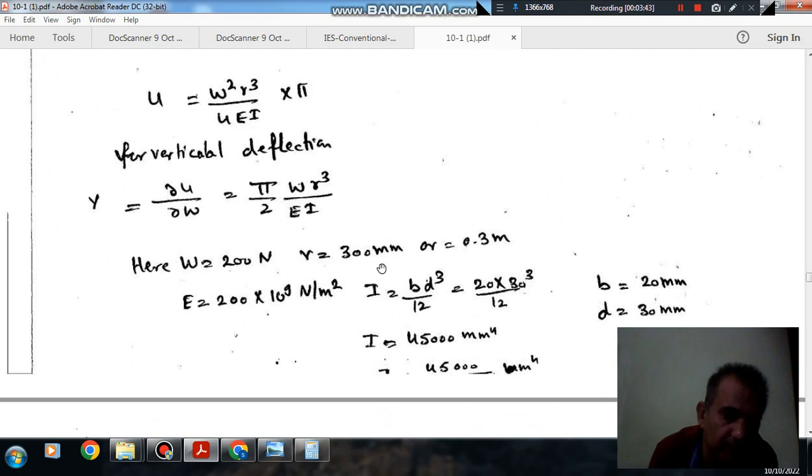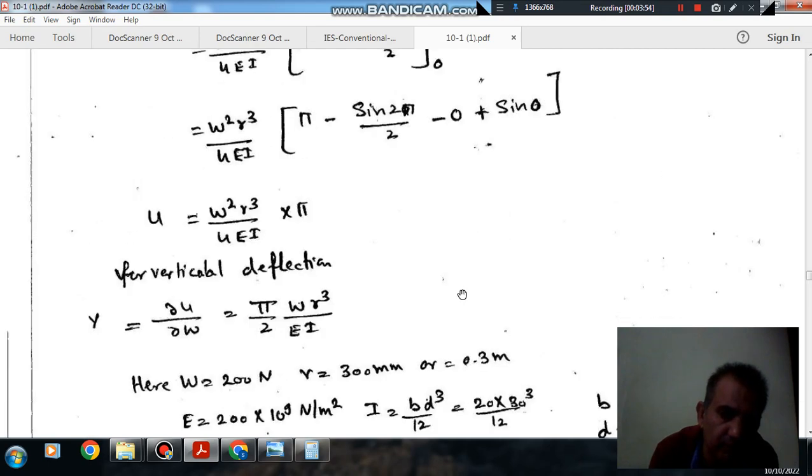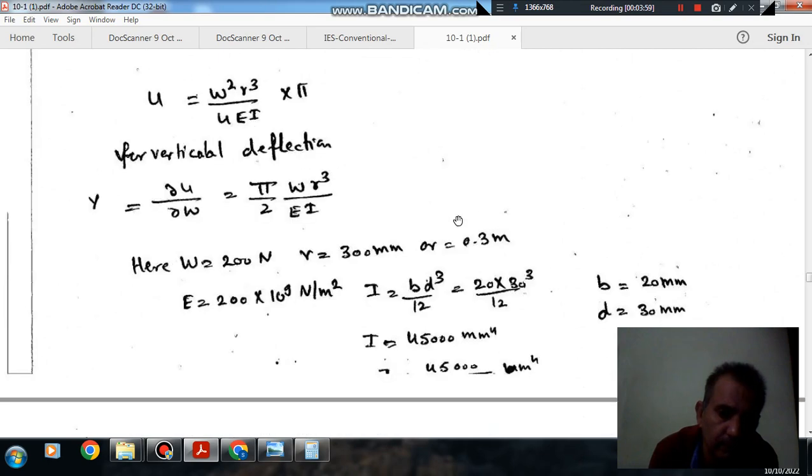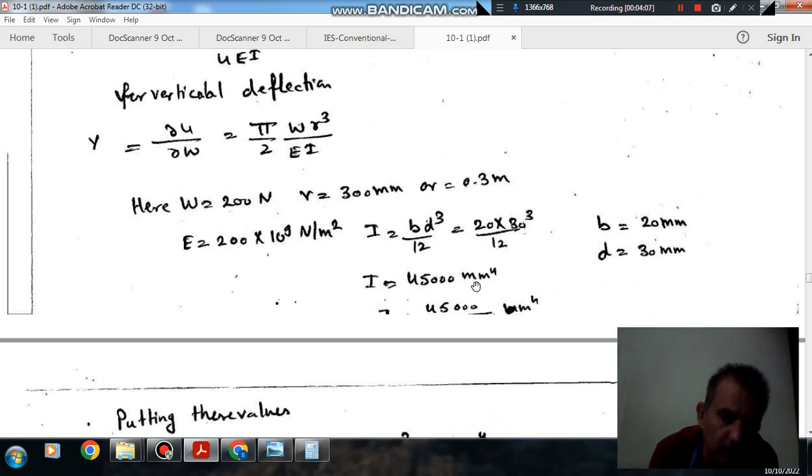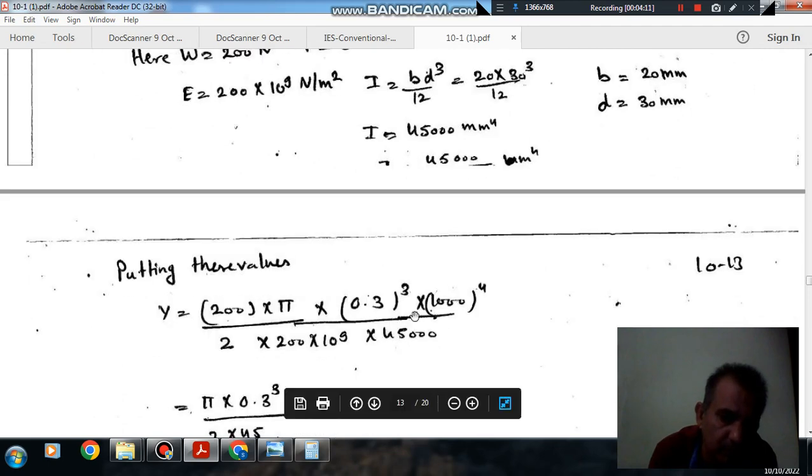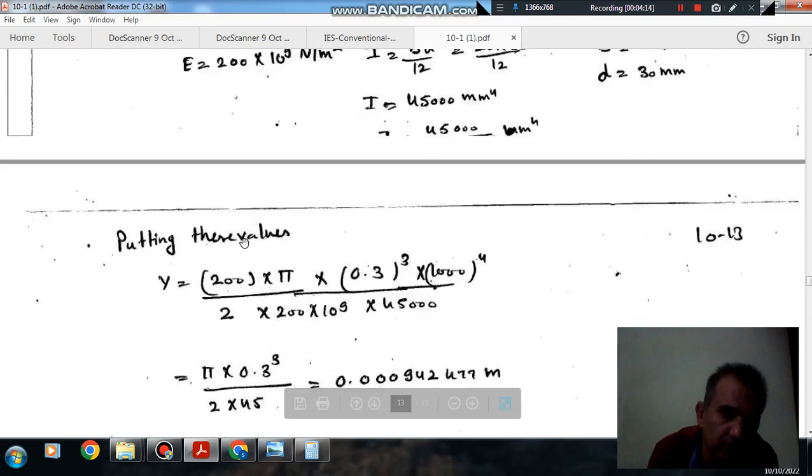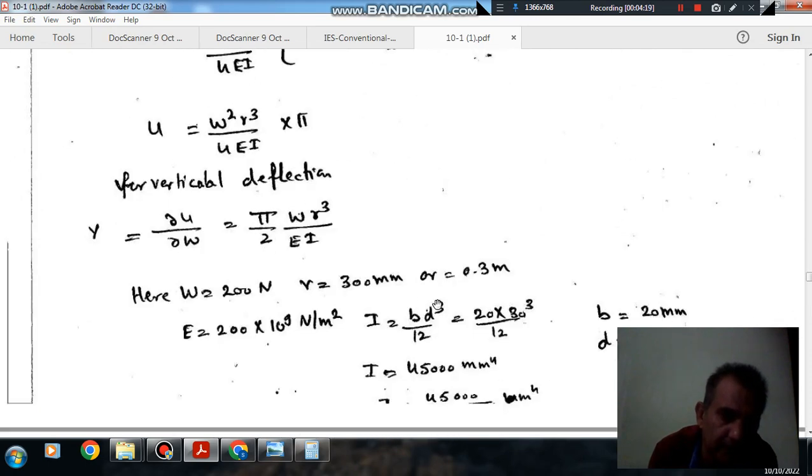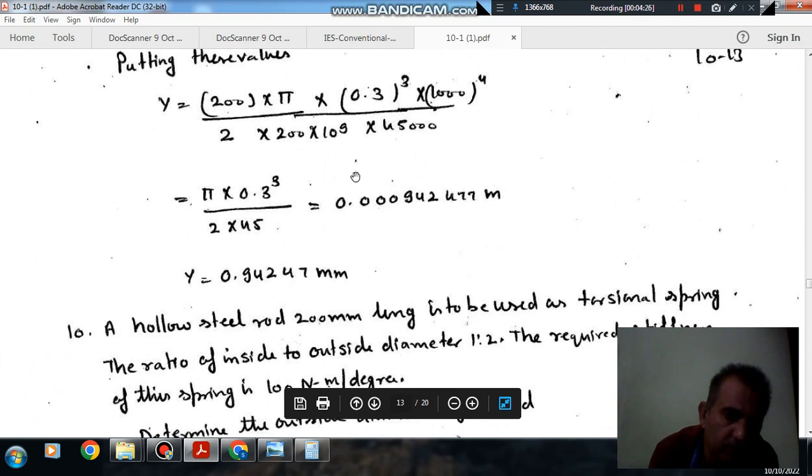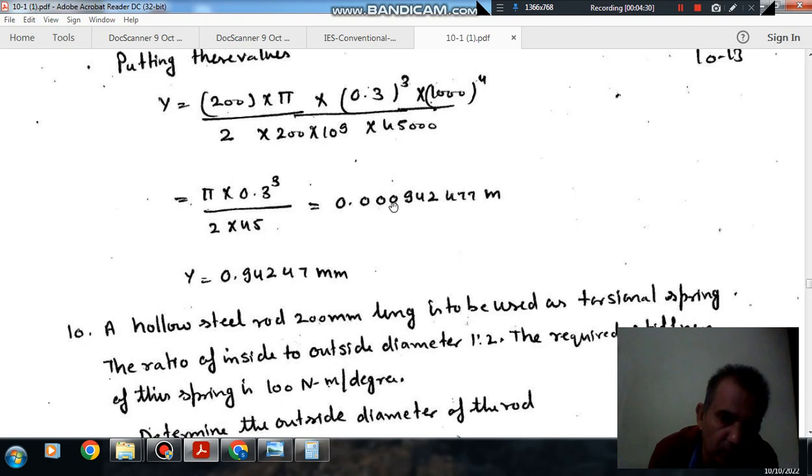Now we have W is equal to 200 N, R is equal to 300 mm or 0.3 meters. E is 200 GPa or 200 into 10^9 N per meter square. And I is BD cube by 12, B is thickness 20 mm, depth is 30 mm, so that is 20 into 30 cube by 12, or it is 45,000 mm to the fourth, or 45,000 into 10^-12 meter to the fourth. Now we can put the values. So you can get deflection that is 0.0009407 m or 0.9407 mm is the right answer.